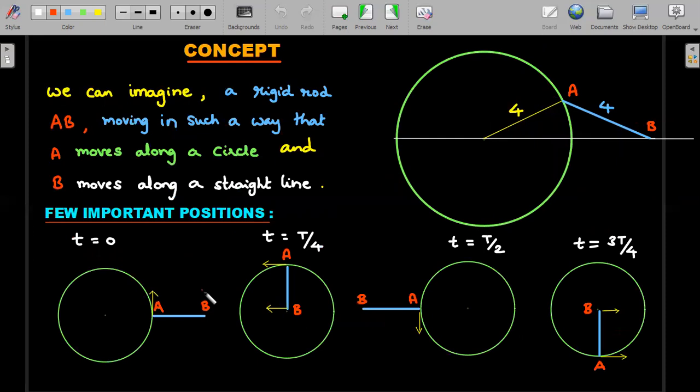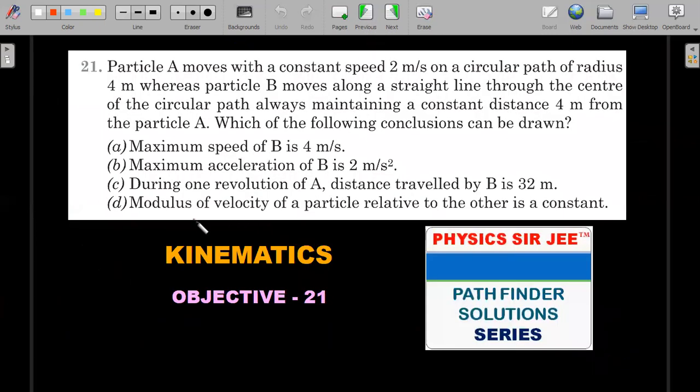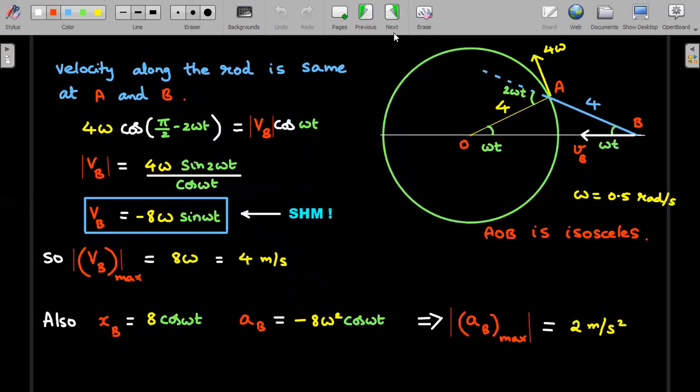How about the last option - is it right or wrong? Let's try to check. Modulus of velocity of particle relative to the other is a constant - so he's talking about relative velocity being a constant magnitude. How is that possible?